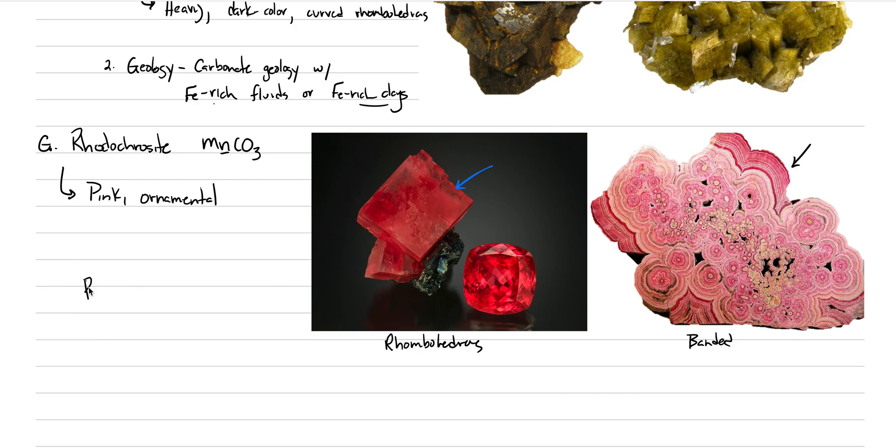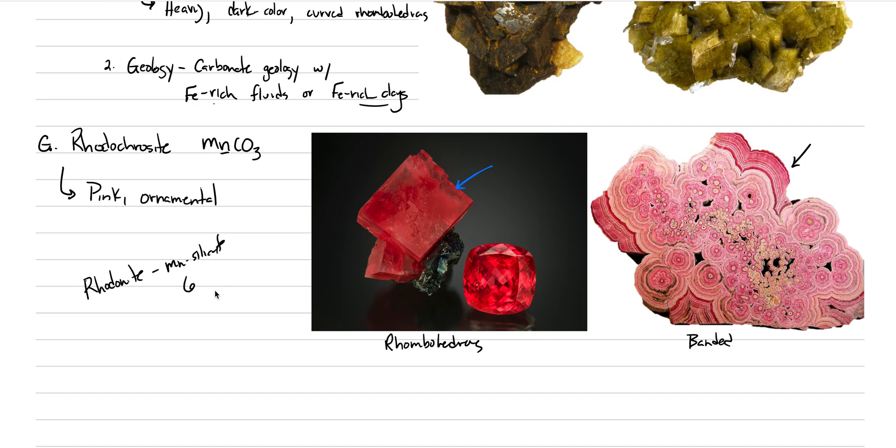The only mineral you can confuse it with is called rhodonite, which is really the only other pink mineral. This is an MnSi silicate, so it ends up being harder with a hardness of six where rhodochrosite has a hardness of three.